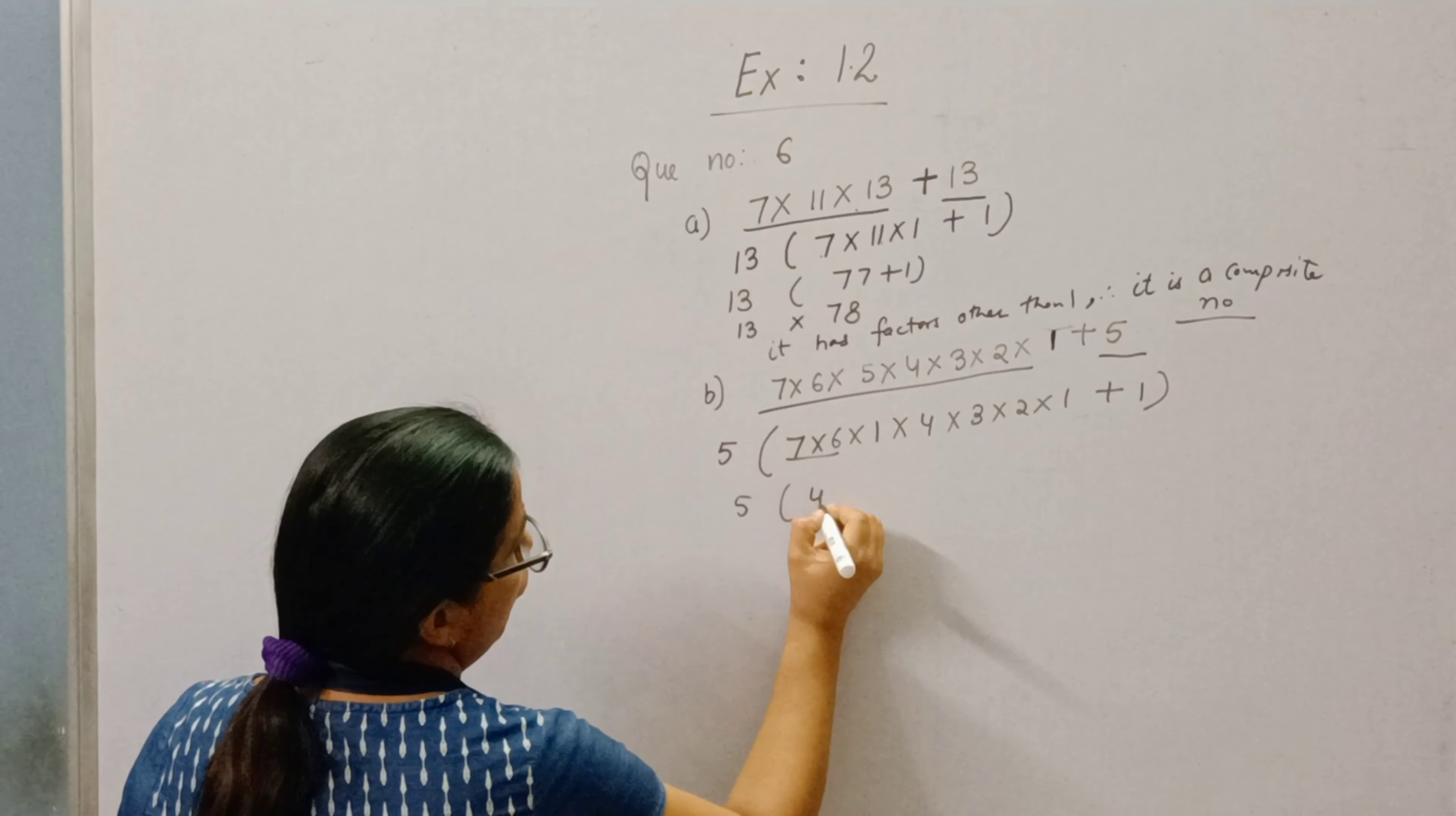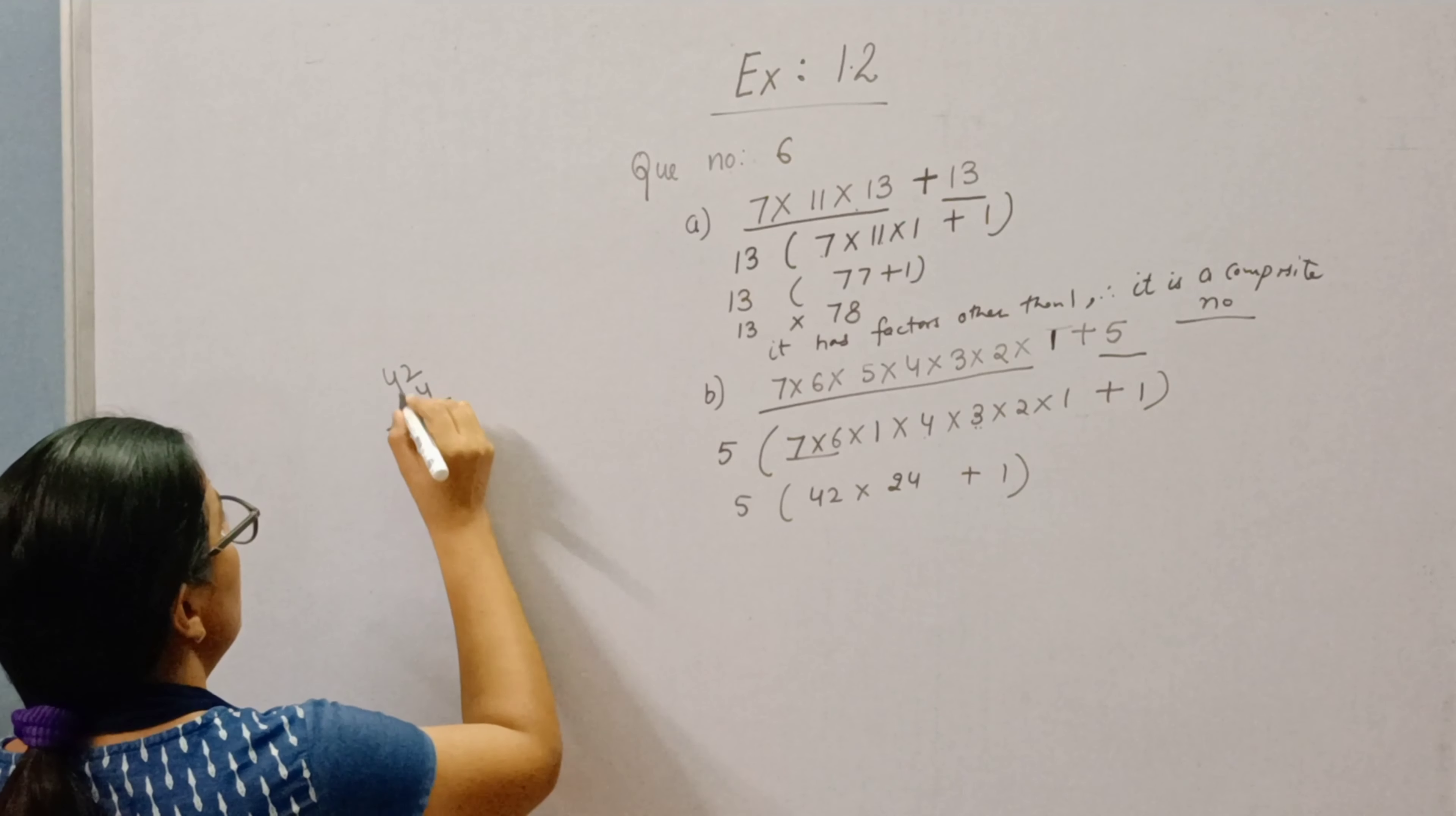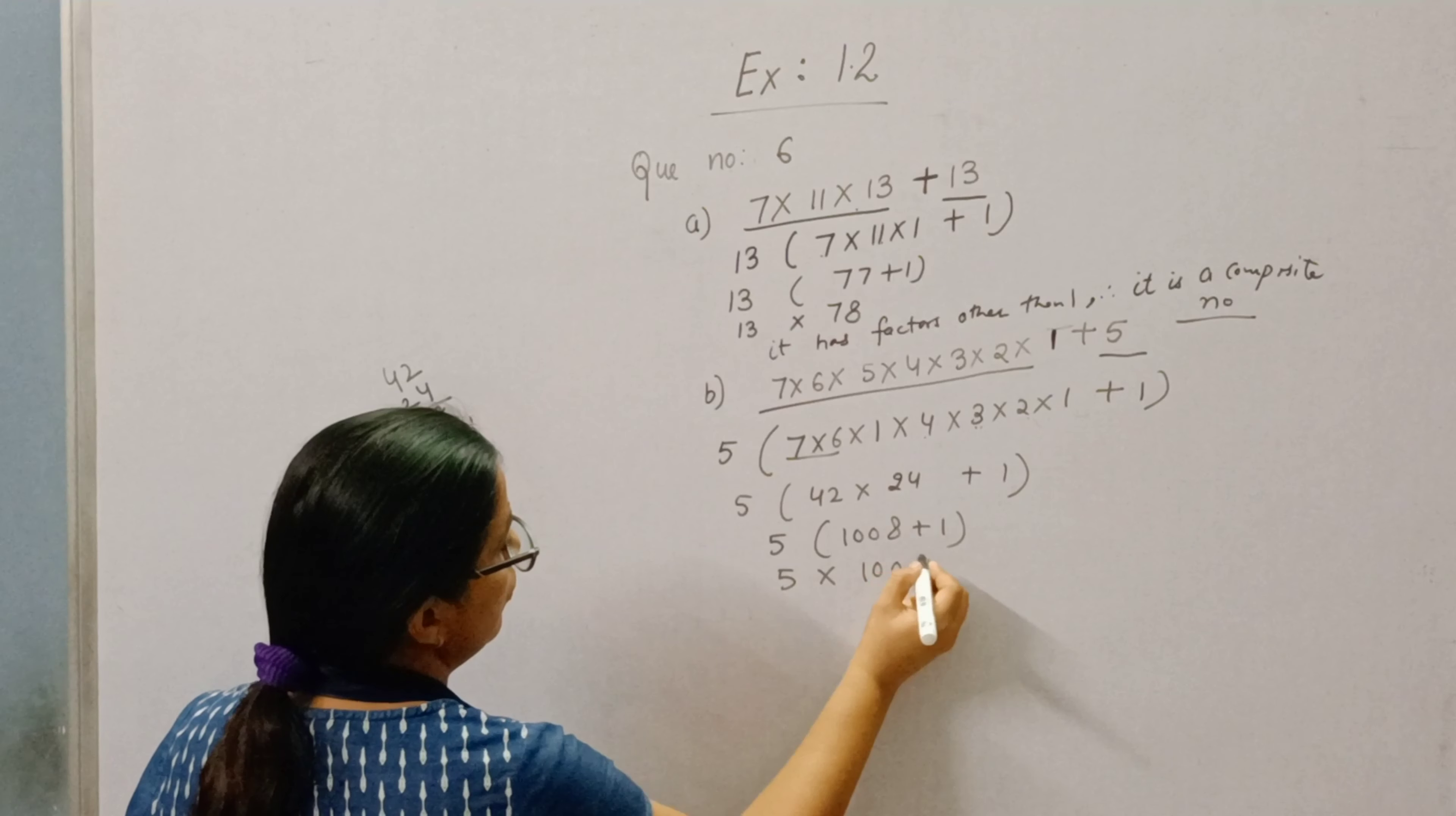7 into 6 is 42. Into 4 is 12, 12 into 2 is 24 plus 1. Now multiply 42 by 24. 4 into 2 is 8, 4 into 6 is 16, 2 into 4 is 4, 2 into 8 is... 1008 plus 1. So 5 into 1009.